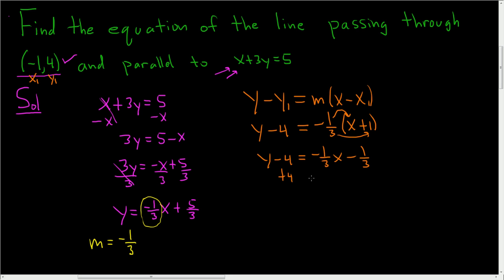Add 4 to both sides. So we end up with y equals negative 1 third x minus 1 third plus 4. Now we need to add the 4 and the negative 1 third. So this is really 4 over 1. We want them to have a common denominator, so we can multiply this by 3 over 3. So this is really y equals negative 1 third x minus 1 third plus 12 thirds, because 3 times 4 is 12, and 3 times 1 is 3.